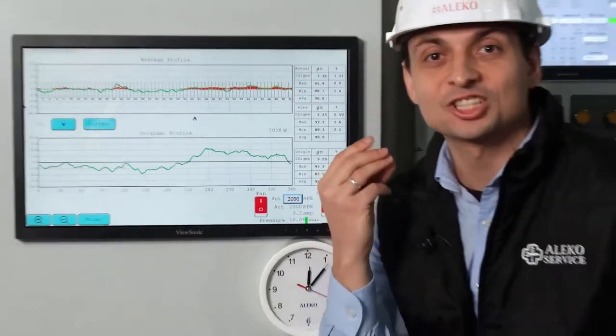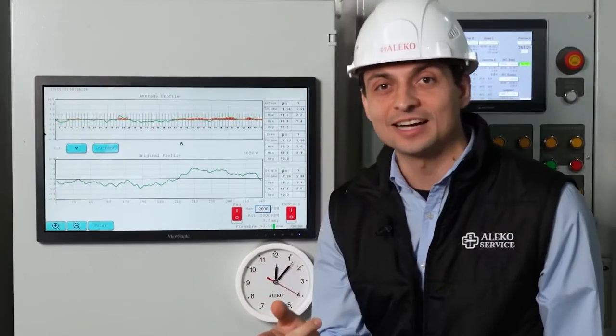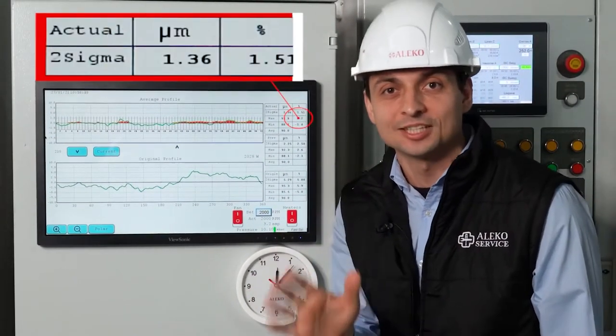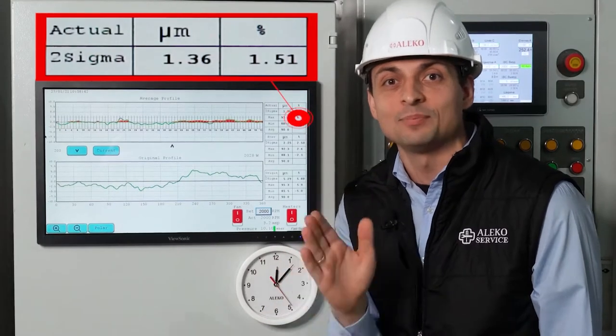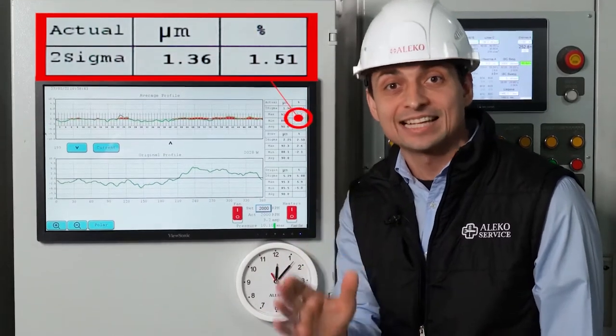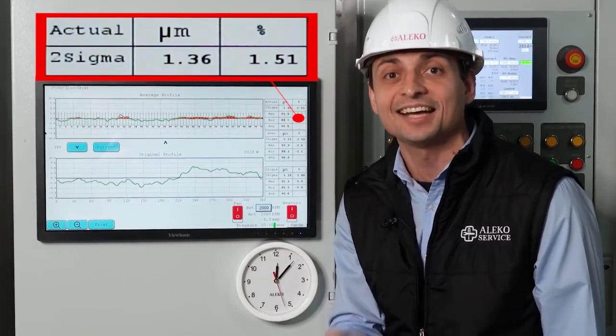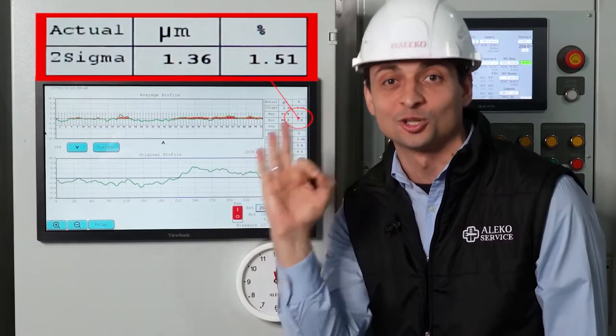In just 6 minutes, 2Sigma decreased by 74% — from 5.68% to 1.51%. That is really cool!